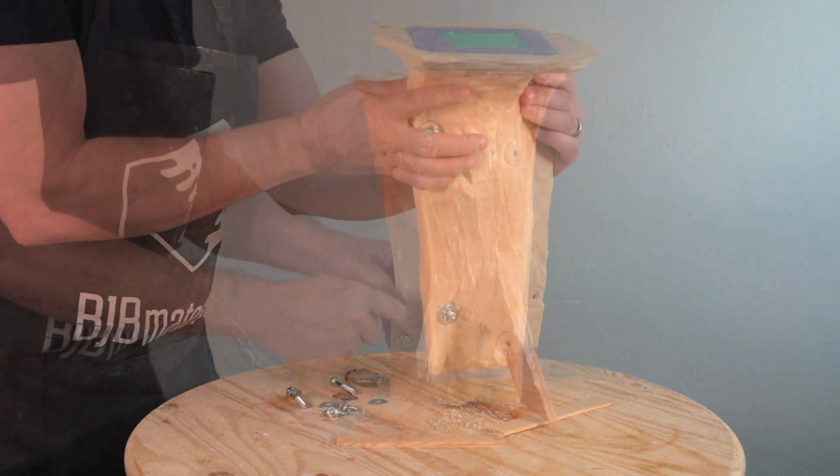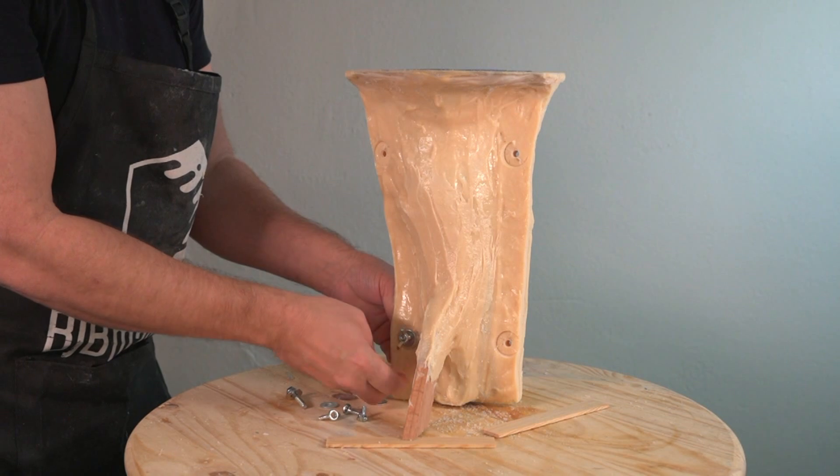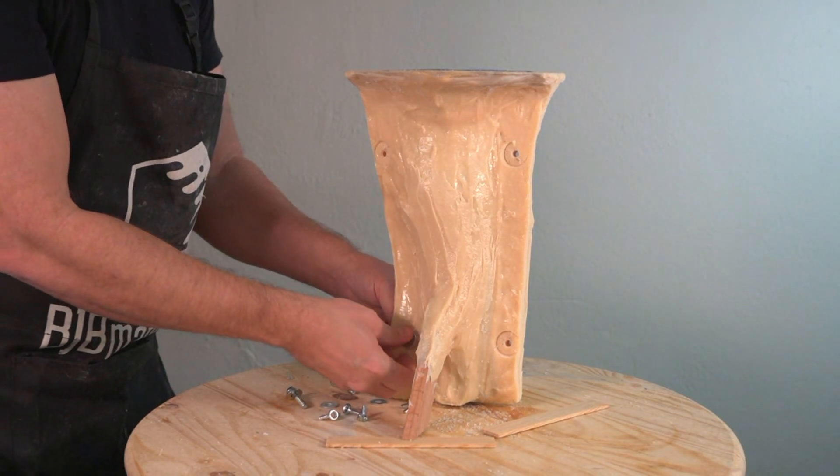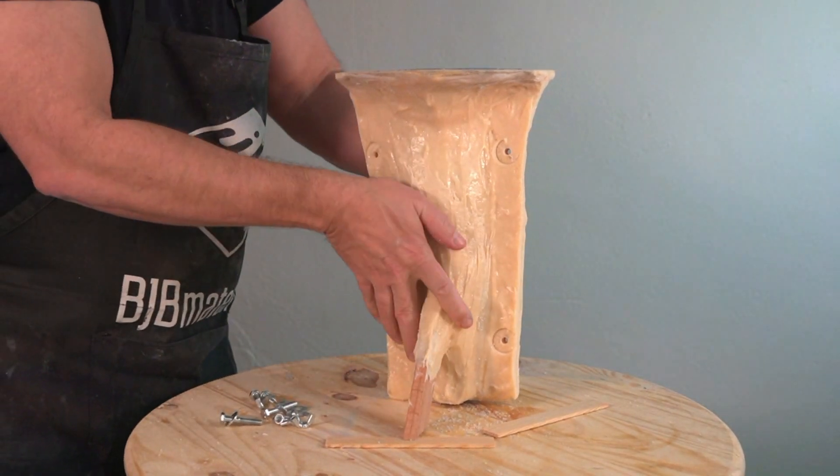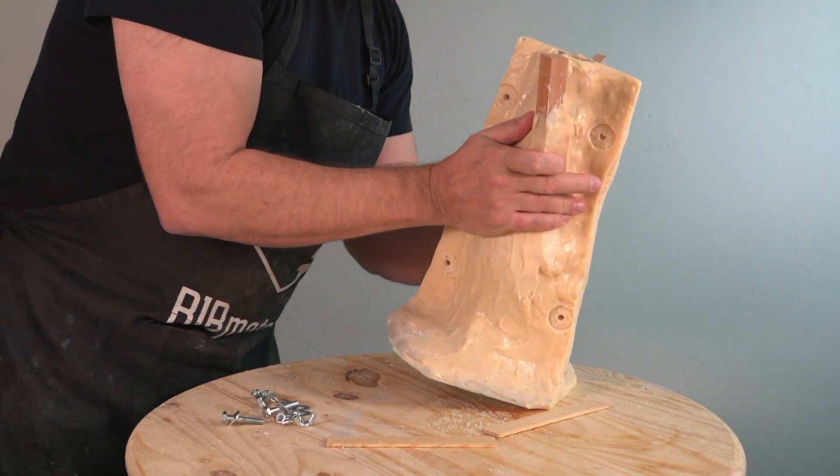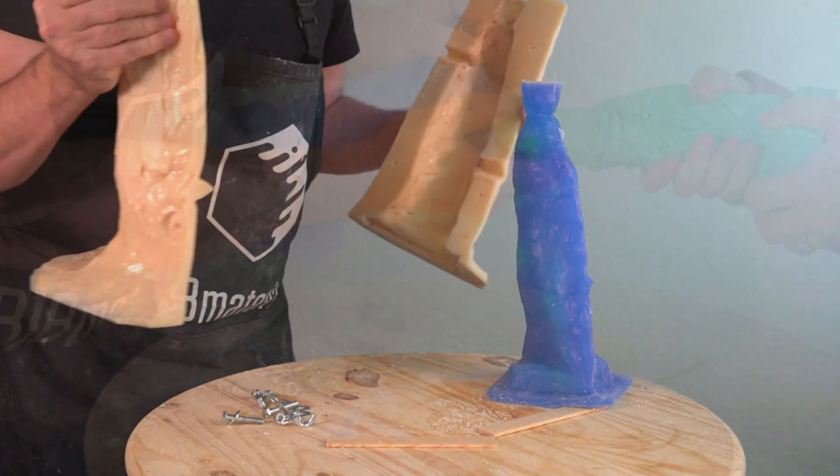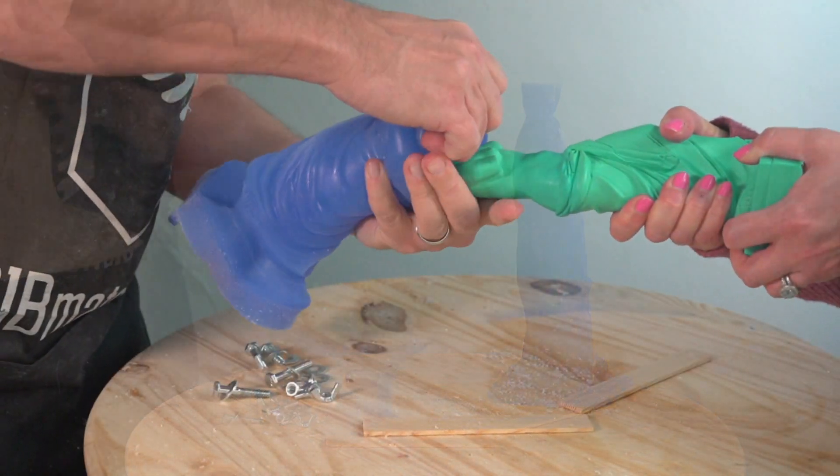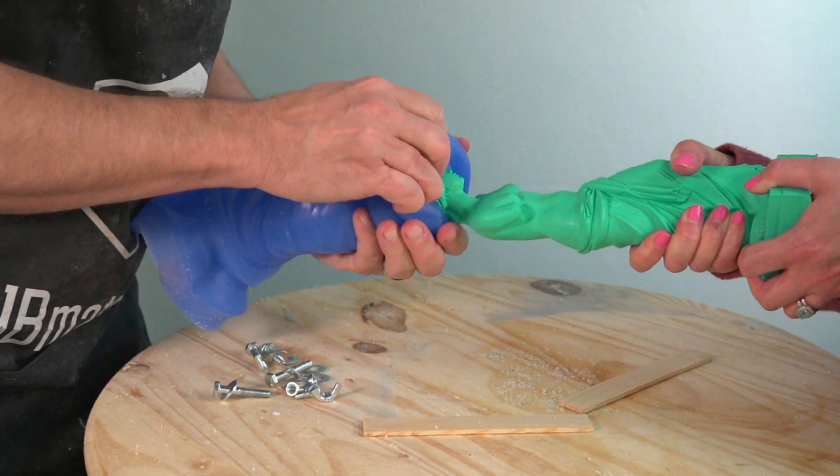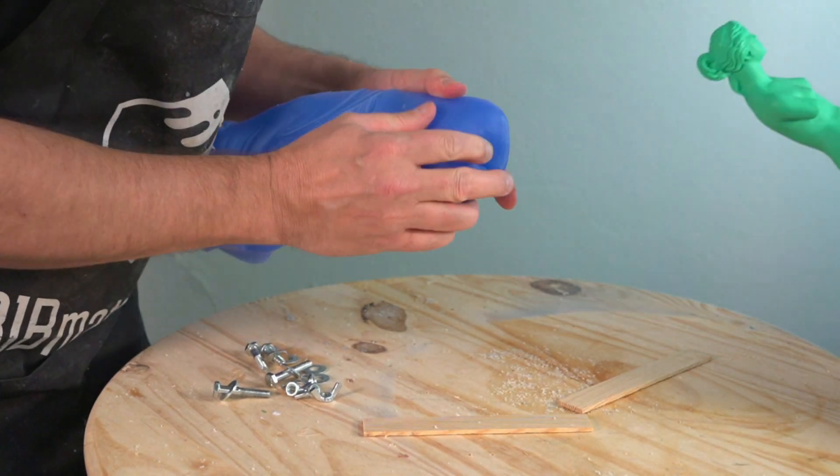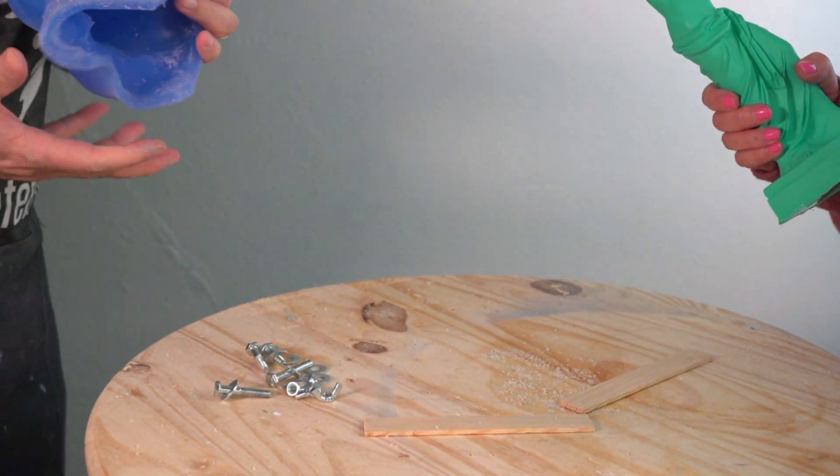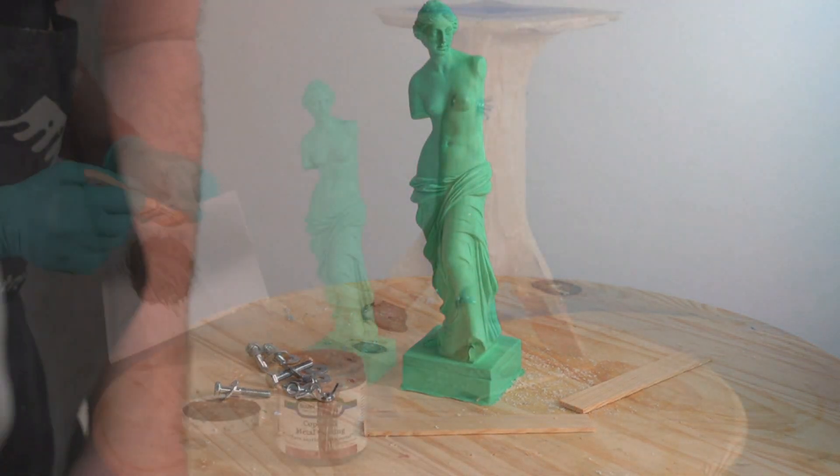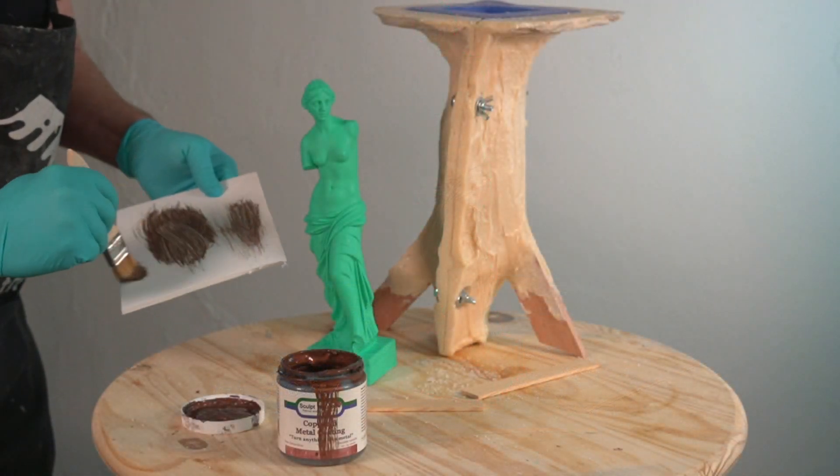This is about 15 minutes later, we're ready to demold our part. Again, you want to be mindful that the thinnest cross section will cure last. If you're casting a figurine like this that might have some little thin areas like fingers or toes that are thinner than the base, you want to make sure you give it plenty of time for those areas to cure completely before you start demolding your part. Here's our second cast from the mold. I had help from my lovely wife here demolding.